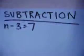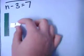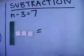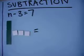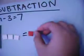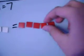Now, onto subtraction. First, we start with a variable and three negatives, which equals seven.